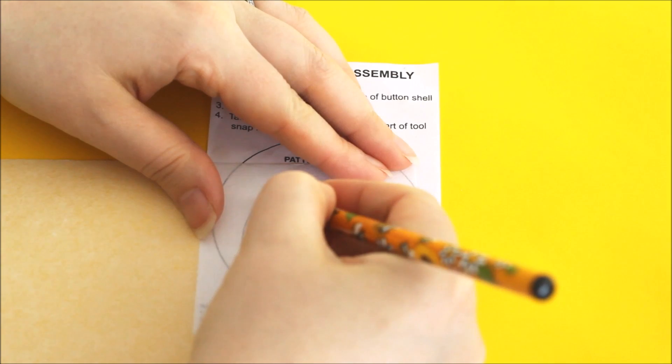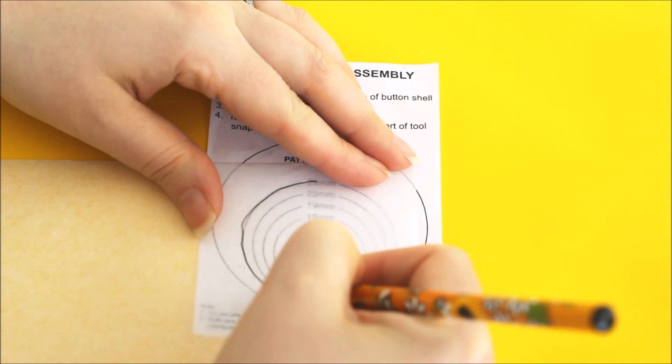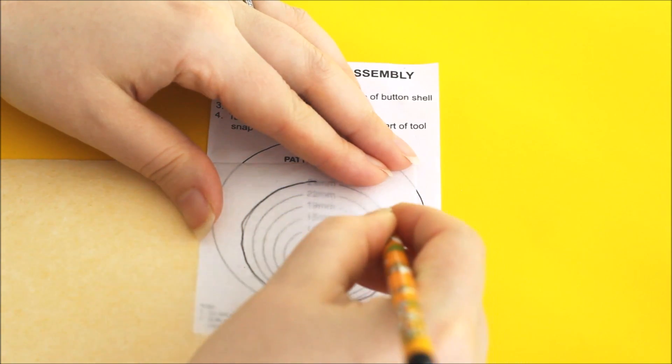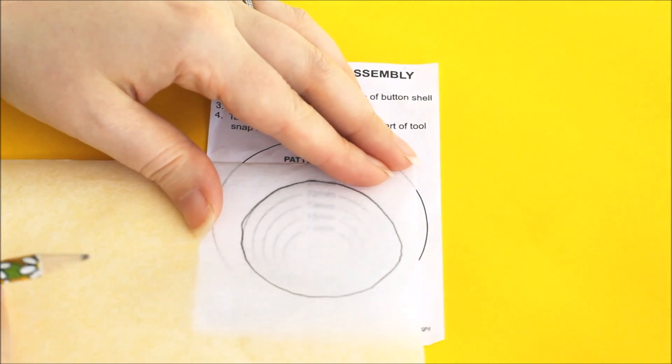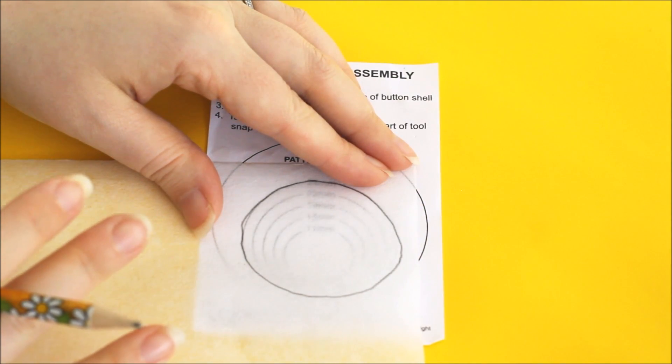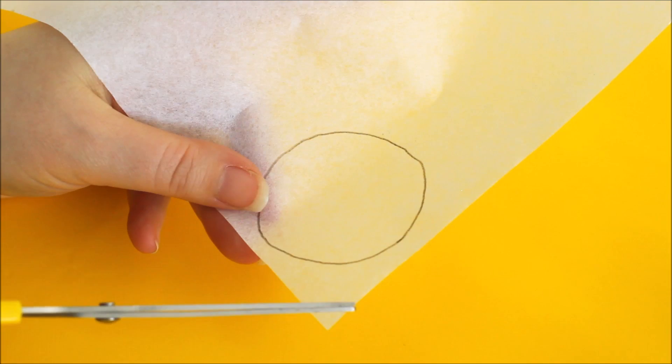Trace roughly around. It doesn't have to be super neat as long as you've got a rough copy. Then all we're going to do next is just trim around it.